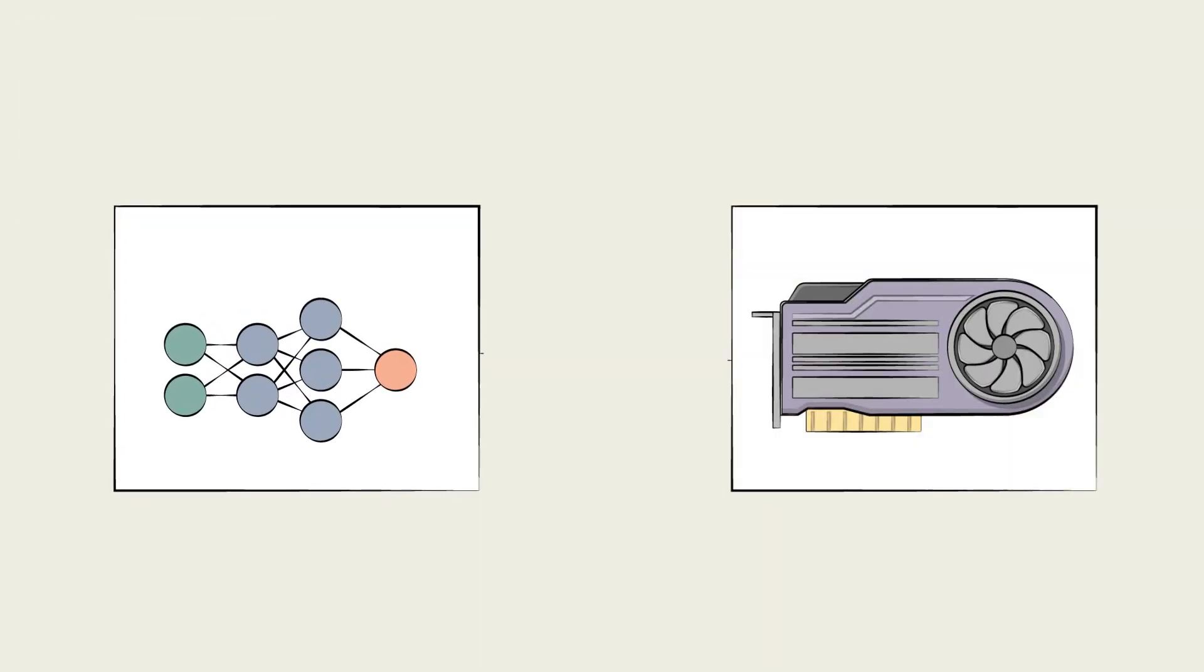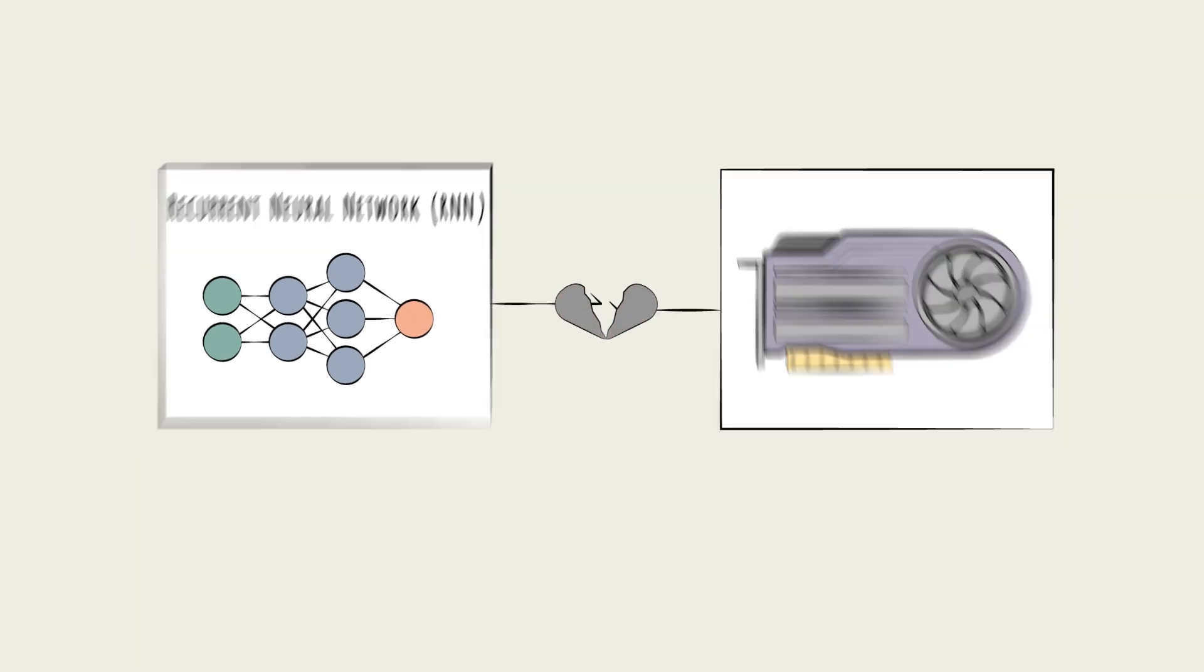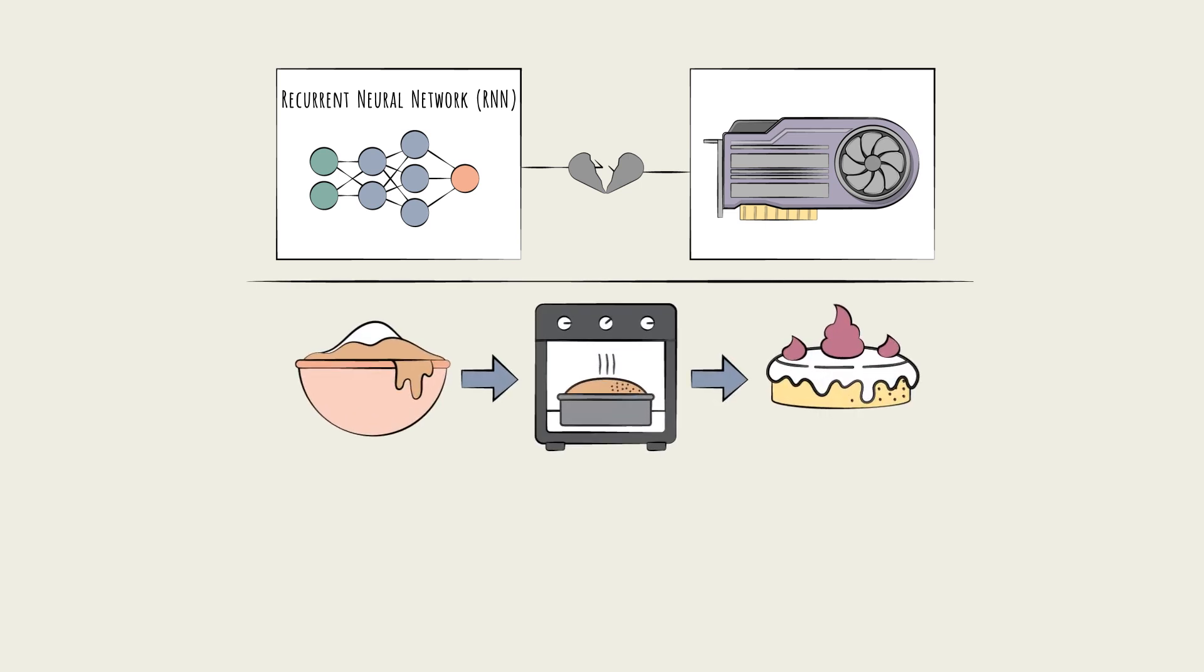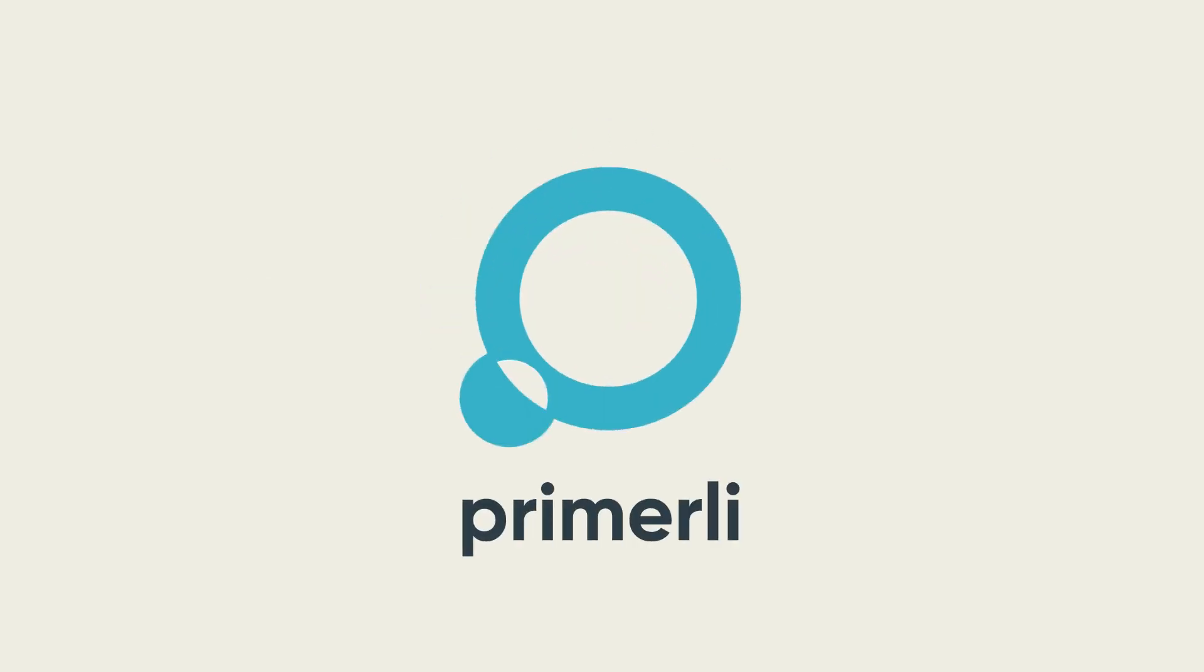Conversely, it wouldn't make much sense to throw a non-parallelizable model like an RNN at those cutting-edge GPUs. That'd be like trying to bake a cake faster by buying a second oven. The bottleneck is the process, not the equipment.